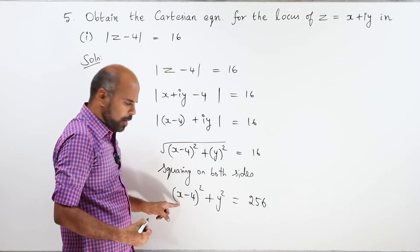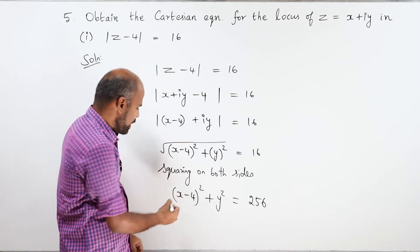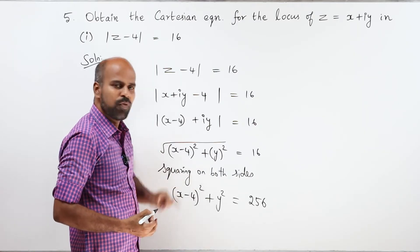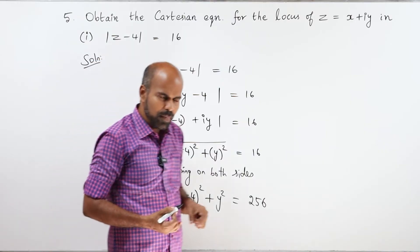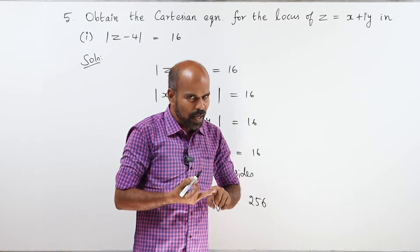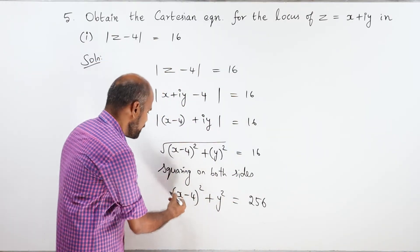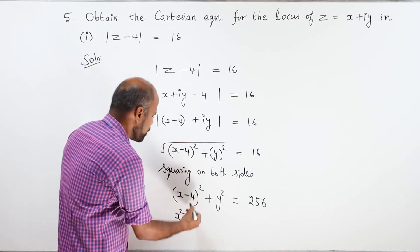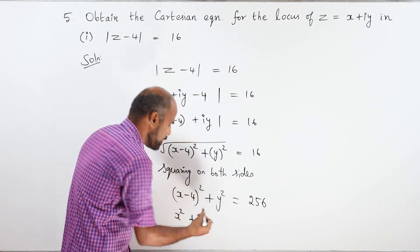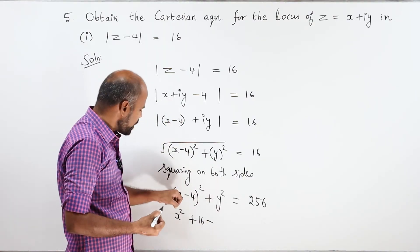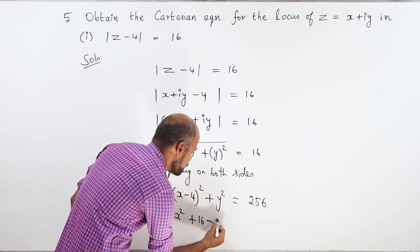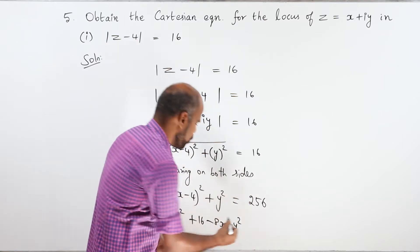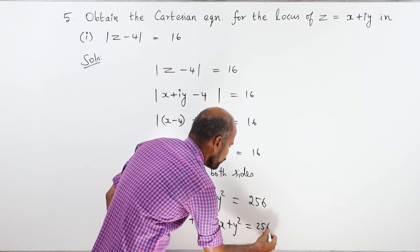Now expanding (x minus 4) whole square using the formula a minus b whole square equals a squared plus b squared minus 2ab: that gives x squared plus 16 minus 8x, plus y squared equals 256.